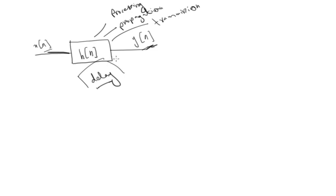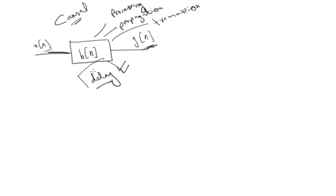Practically, some phase distortion is present. Delay is basically a distortion. A system can introduce magnitude distortion if its amplitude or magnitude response is undesirable, and it introduces phase distortion if its phase response is undesirable. For a causal system it will always introduce some delay, so practically some phase distortion is allowed.